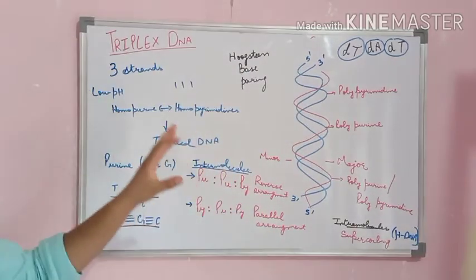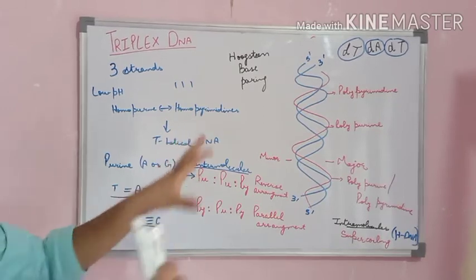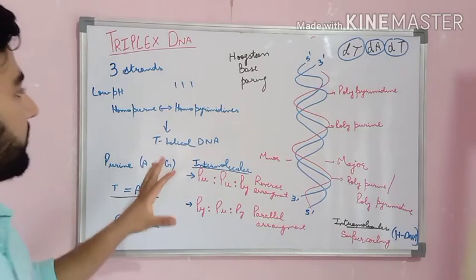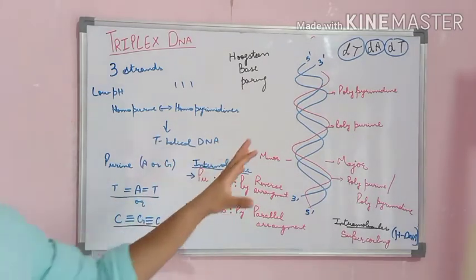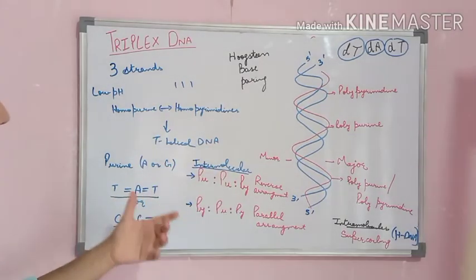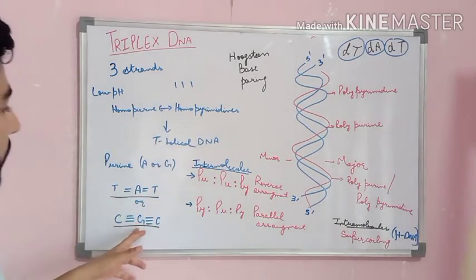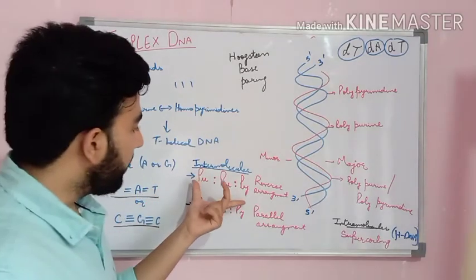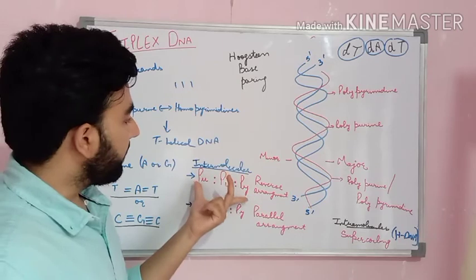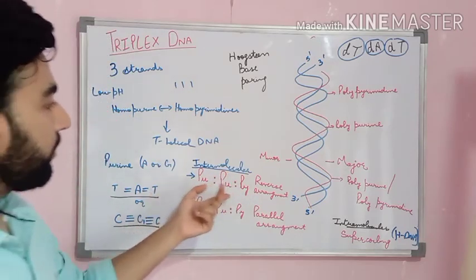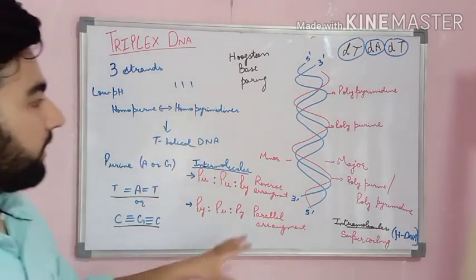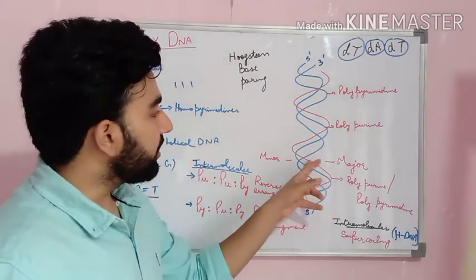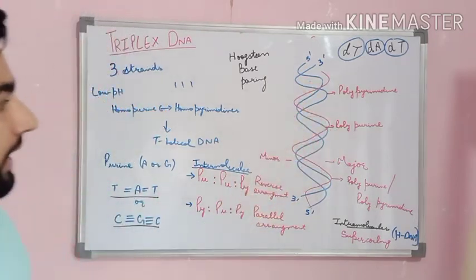To recap the triple helical DNA: there are three strands formed during low pH, composed of homopyrimidine and homopurine strands, in which the central strand is always purine — adenine or guanine. The base pairing formed between these nucleotide bases is known as Hoogsteen base pairing, and the triple helical strand always forms along the major groove of the double helical DNA.